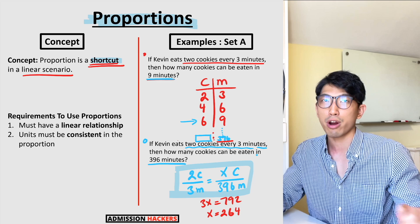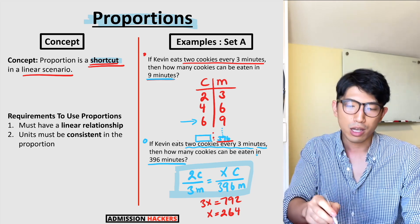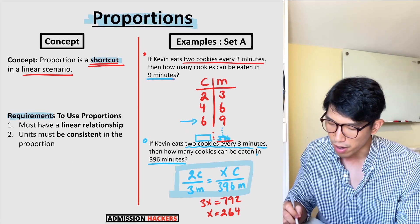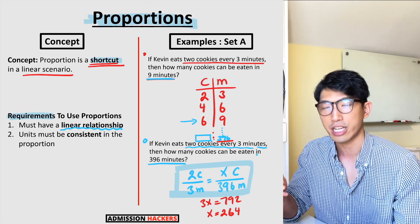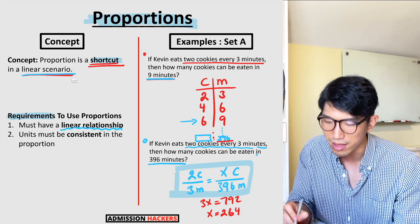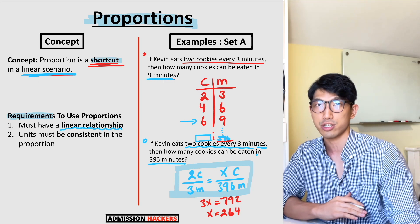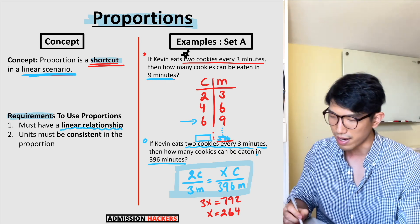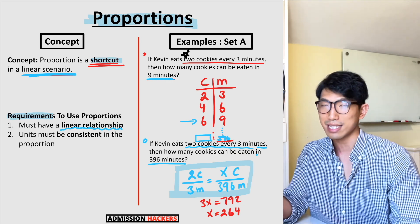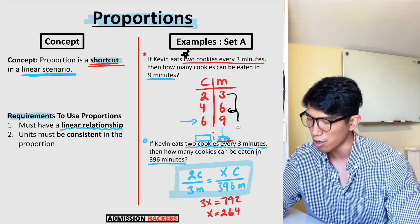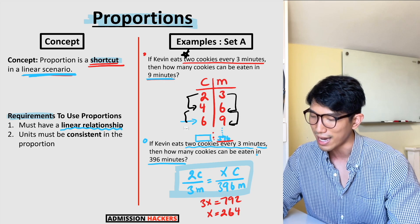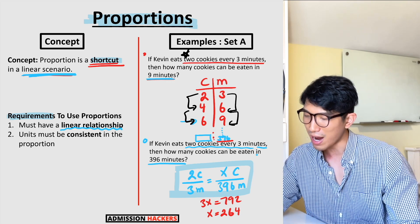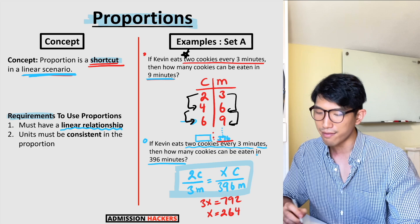Can we use proportion on any question? No — there are two requirements. The first is that there must be some kind of linear relationship in the question. For example, 'he eats two cookies every three minutes' is a linear relationship because every time three minutes goes by, you increase cookies by the same amount. If you graph these data points, they form a straight line — that's why it's called a linear relationship.